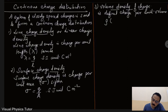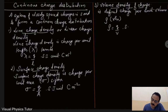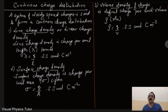Volume charge density is denoted by rho. Therefore, rho is equal to Q divided by volume (V). Its SI unit is coulomb per meter cubed, that is C·m⁻³.